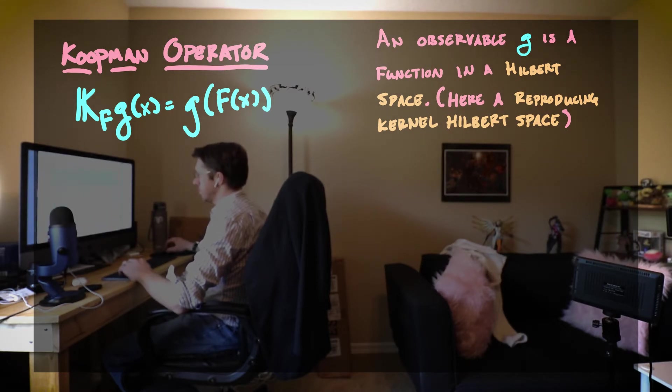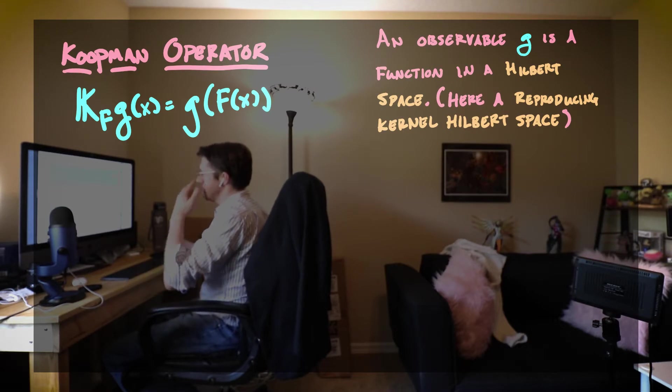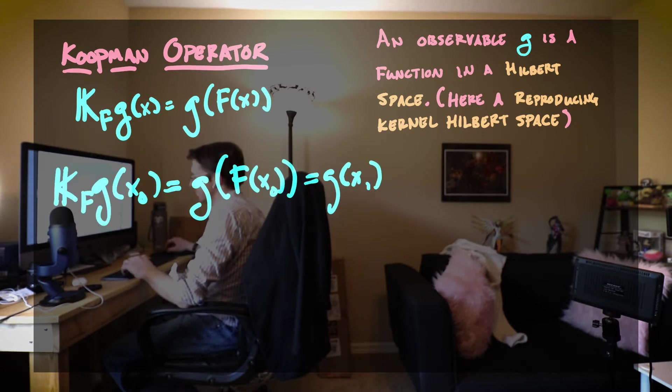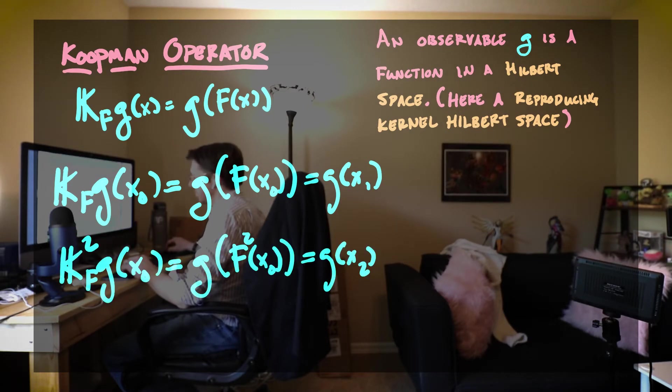But we'll talk about that later. So assuming that we know what our dynamics are, then if we take a snapshot, say our initial snapshot x0, and we throw it into the Koopman operator applied to our observable, what we're going to have is we're going to have g composed with f composed with x0.